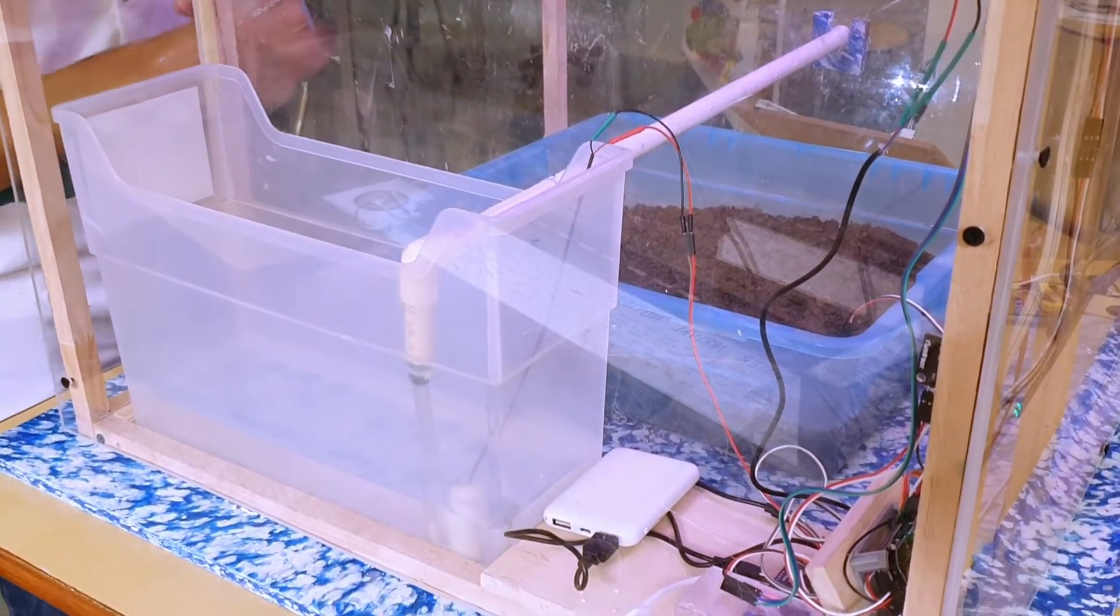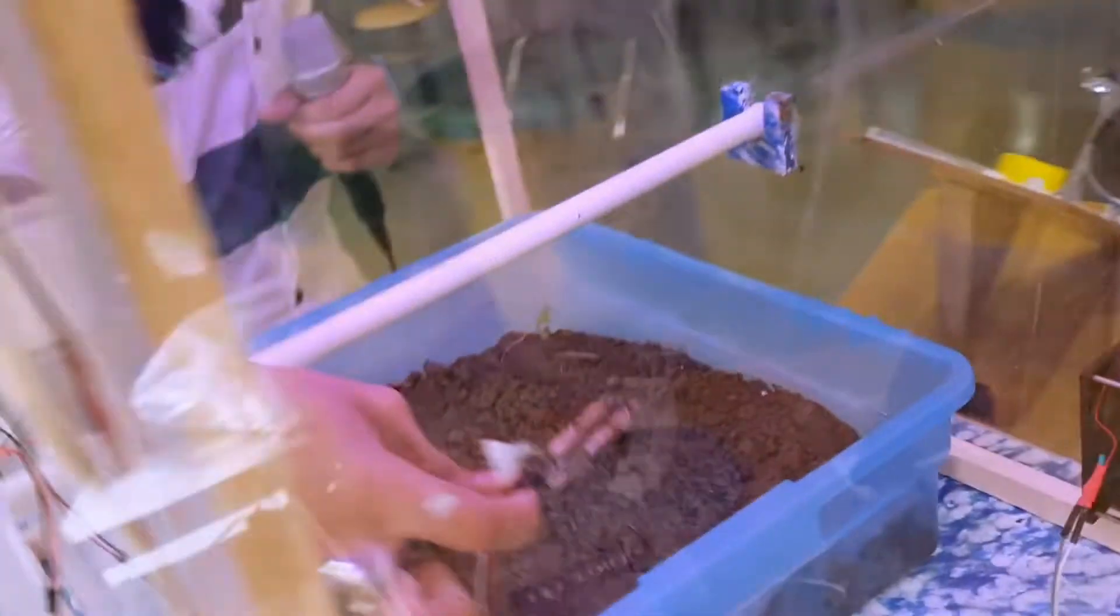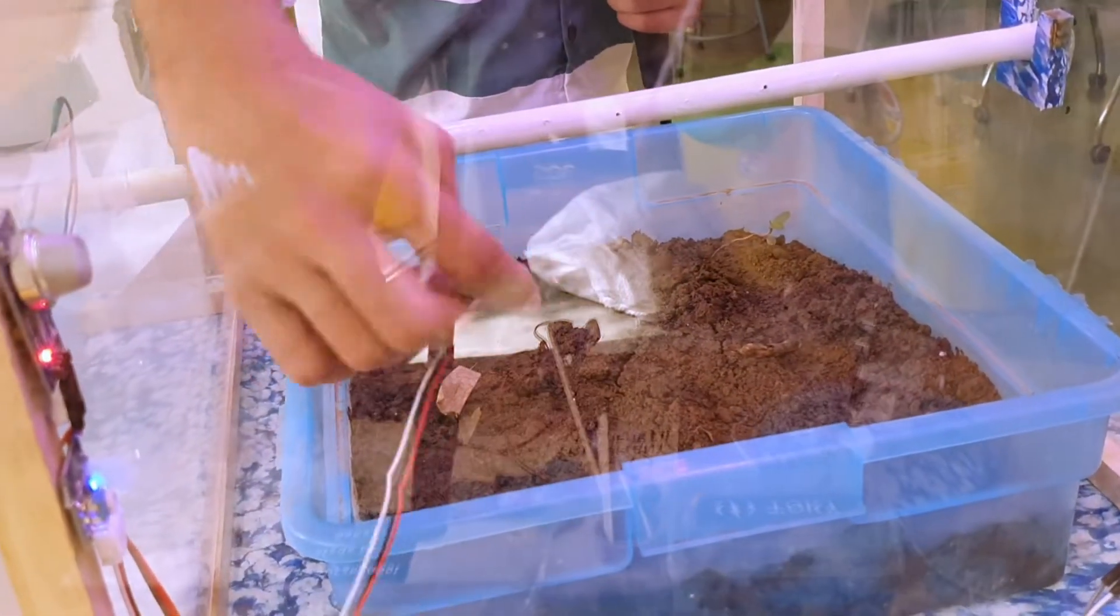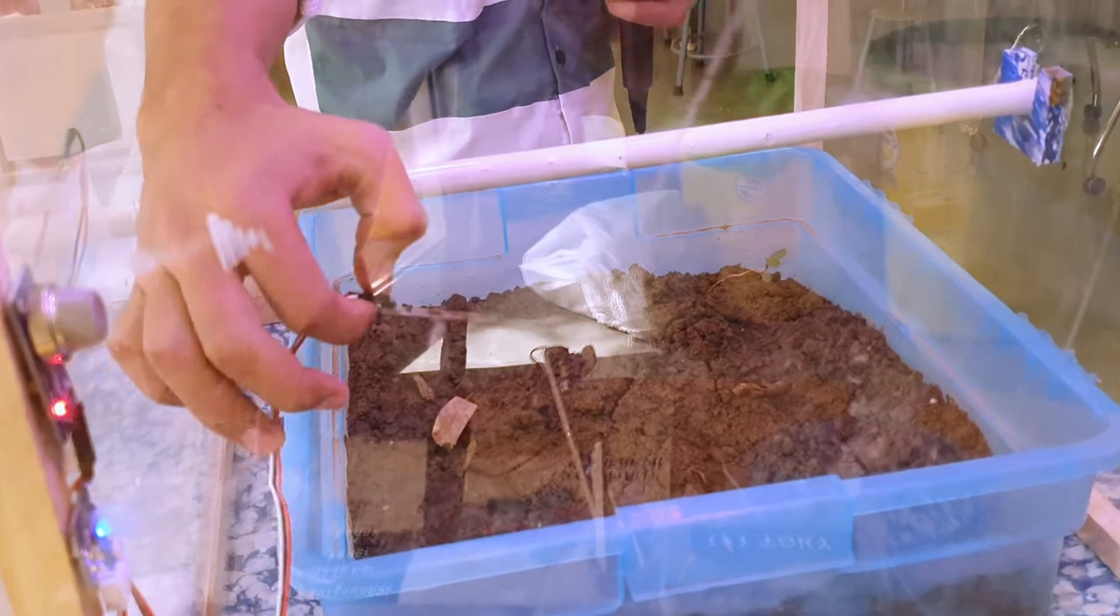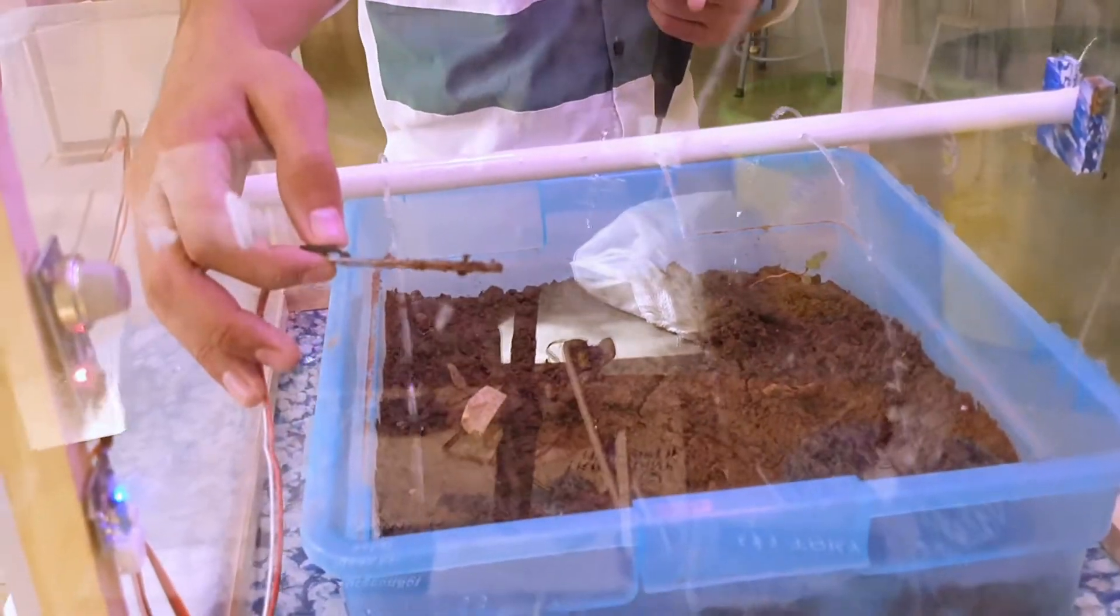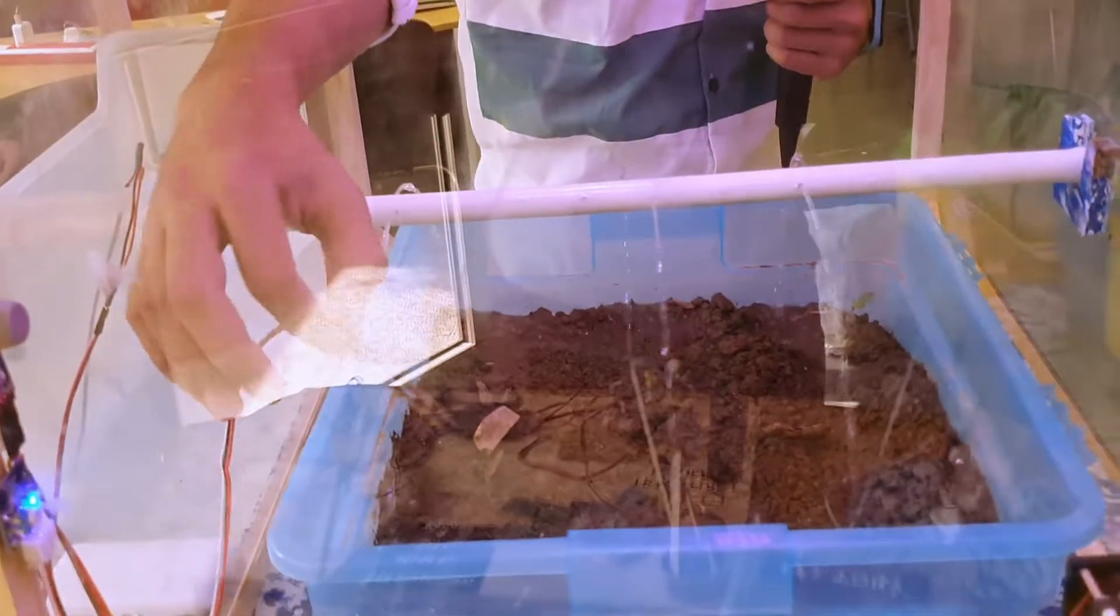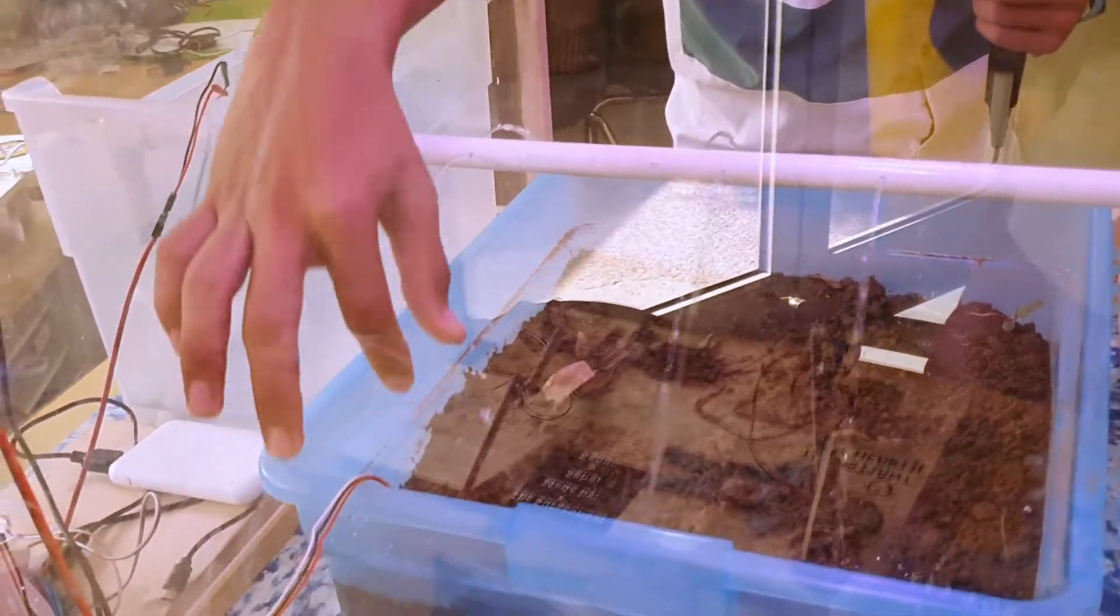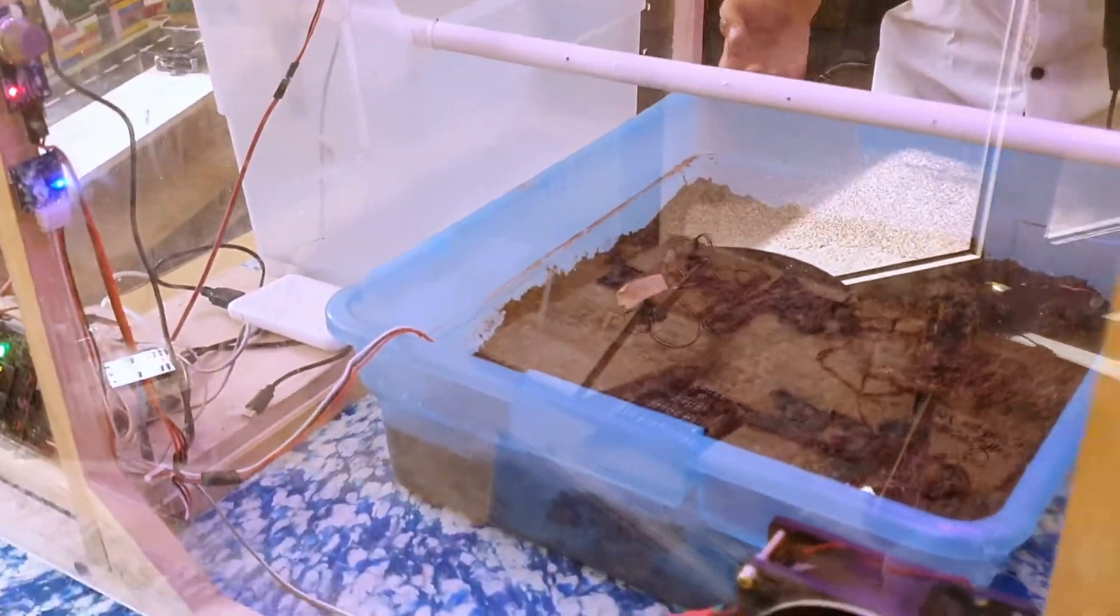We will get the data from the soil moisture sensor which is here, and whenever the soil moisture sensor feels like the soil is dry, the water starts as we can see it. Let me just plug it. Now we have enough water so it turned off.